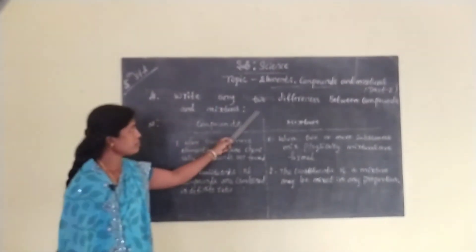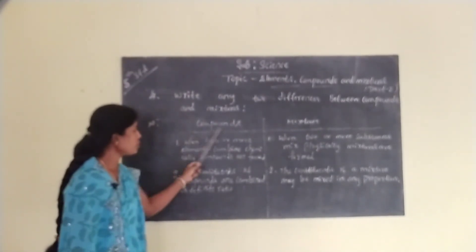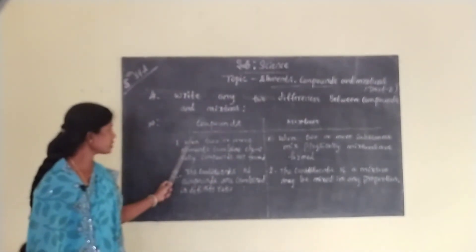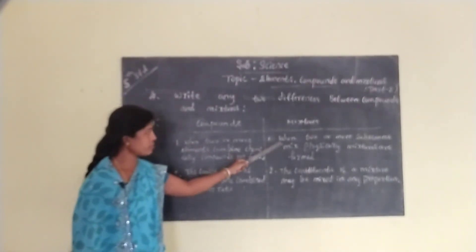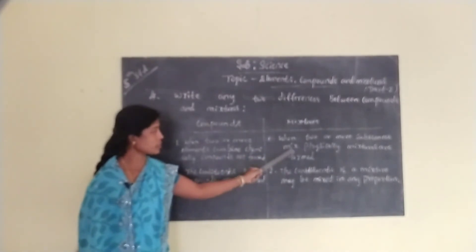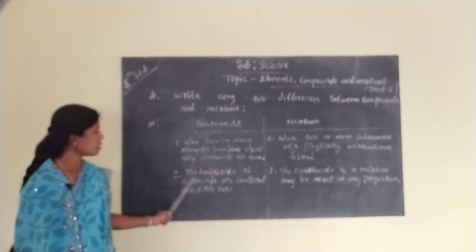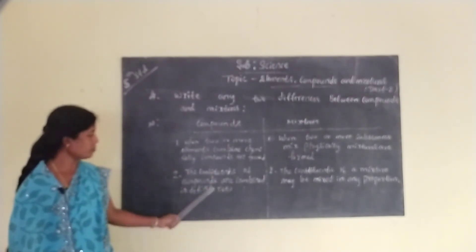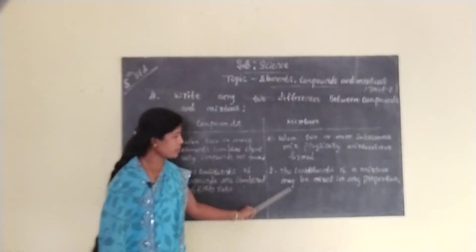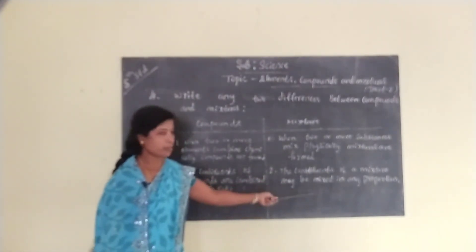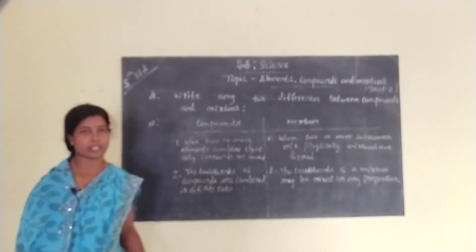Write any two differences between compounds and mixtures. Compounds: when two or more elements combine chemically, compounds are formed. Mixtures: when two or more substances mix physically, mixtures are formed. Second difference: the constituents of compounds are combined in a definite ratio, whereas the constituents of a mixture may be mixed in any proportion. Children, all of you practice these questions and answers. Thank you.